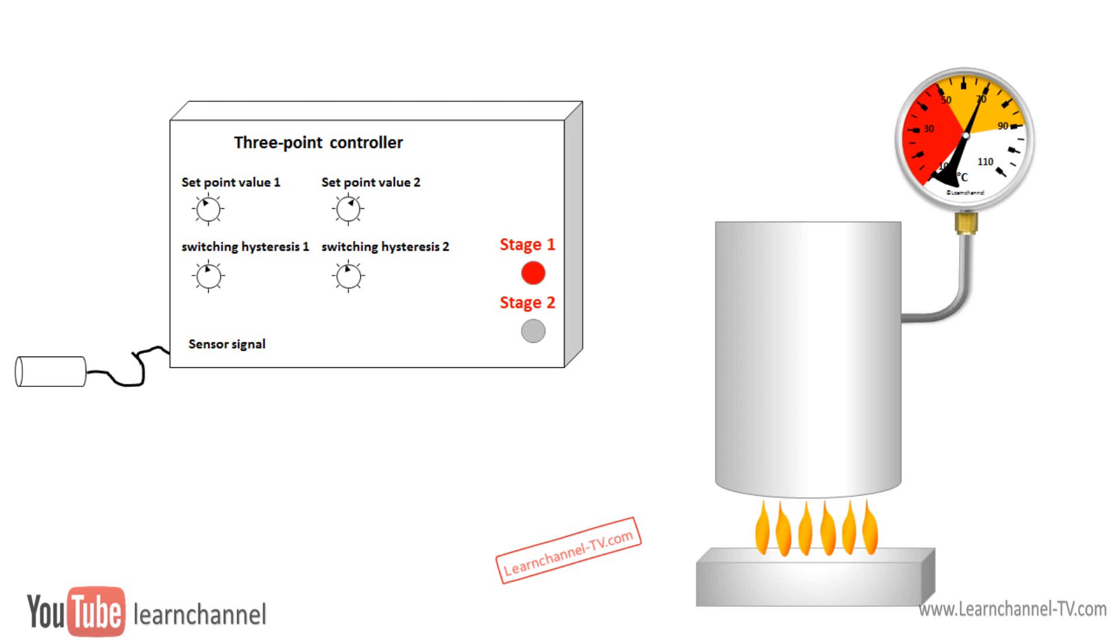However, a three-point controller can also switch two-stage actuators, for example, gas or oil burners with two power levels, wherein when falling below the lower set point, a second stage is added.